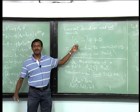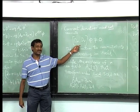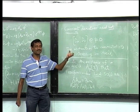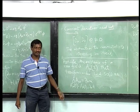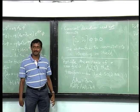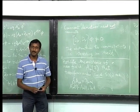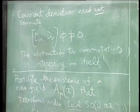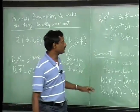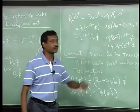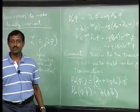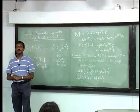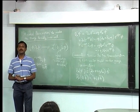Also check that covariant derivatives do not commute and work out the commutator [D_μ, D_ν]φ — you should see something familiar. Next lecture we will work out what the obstruction to commutativity is and proceed from there.